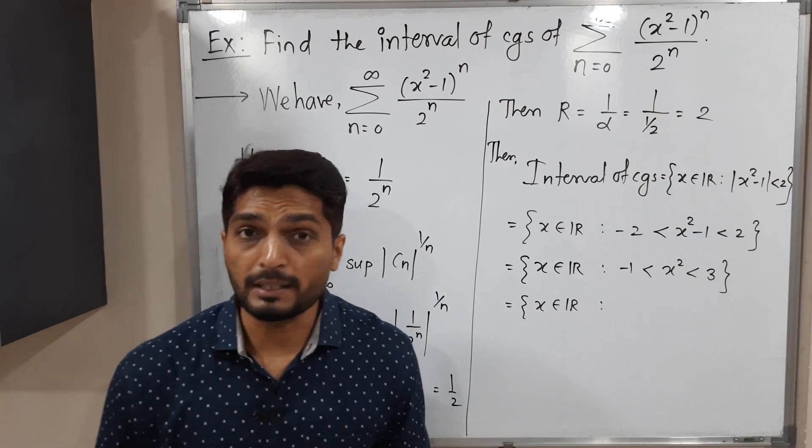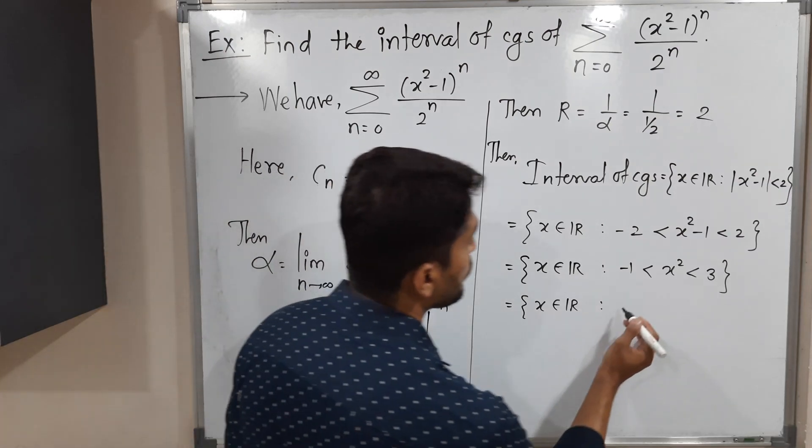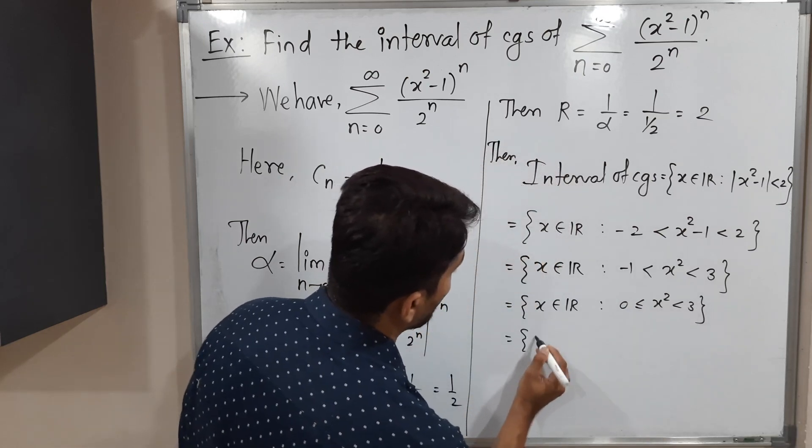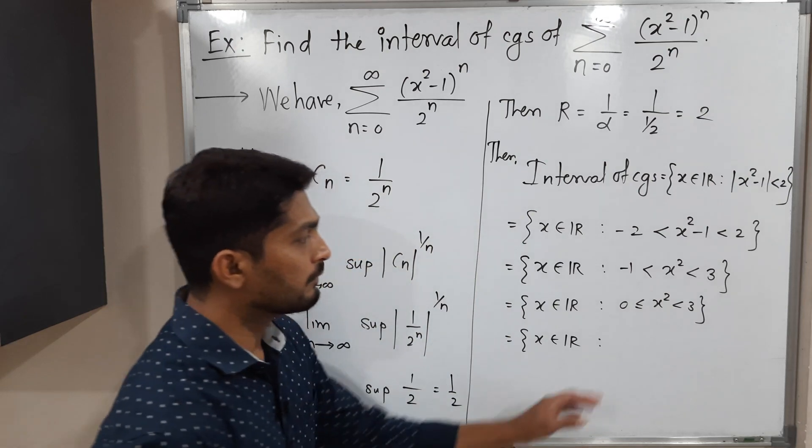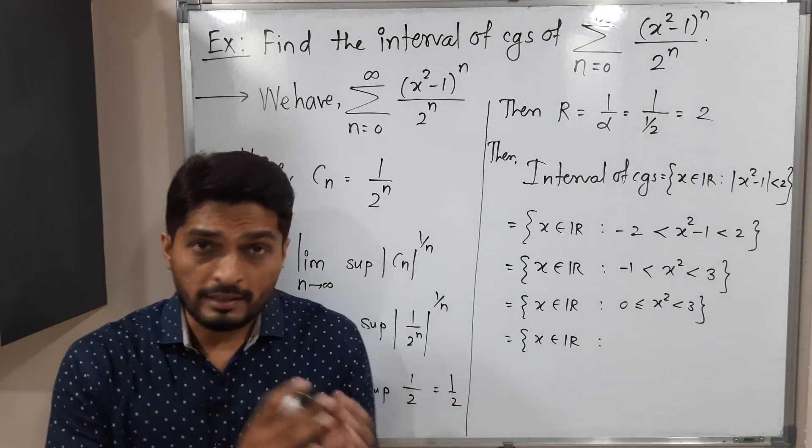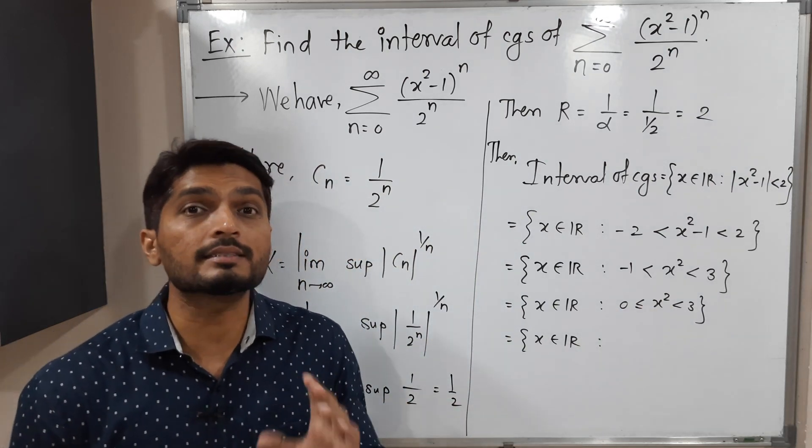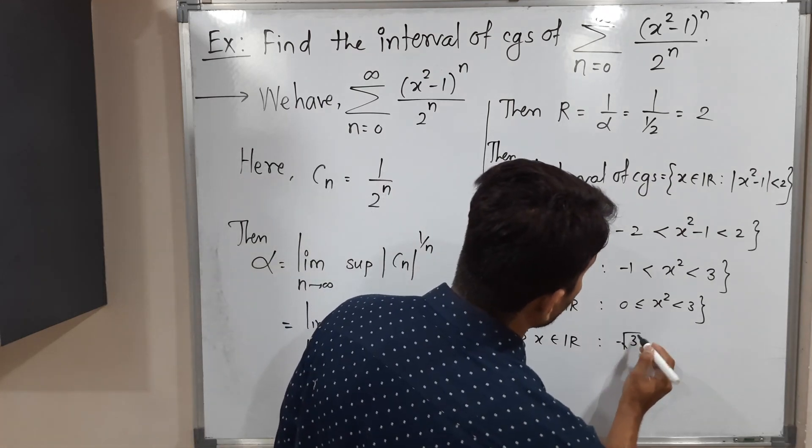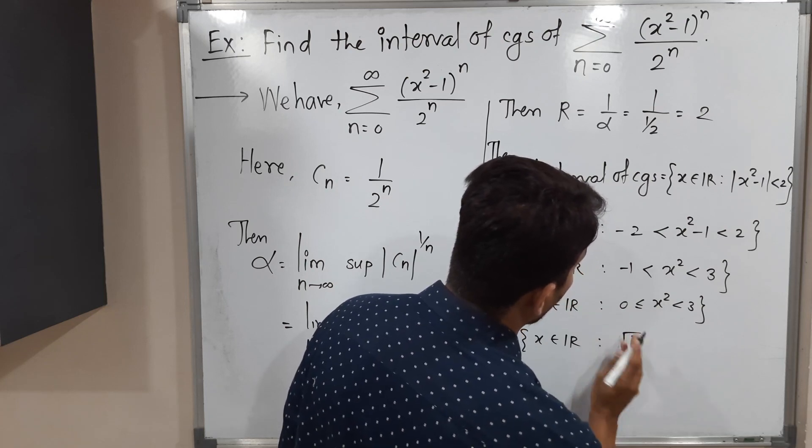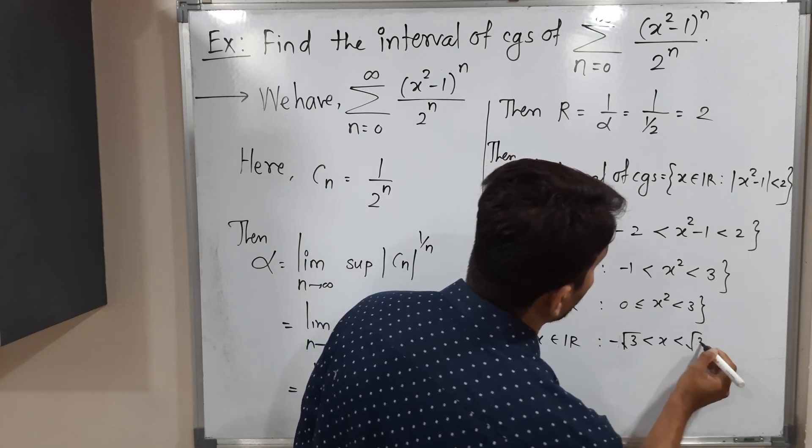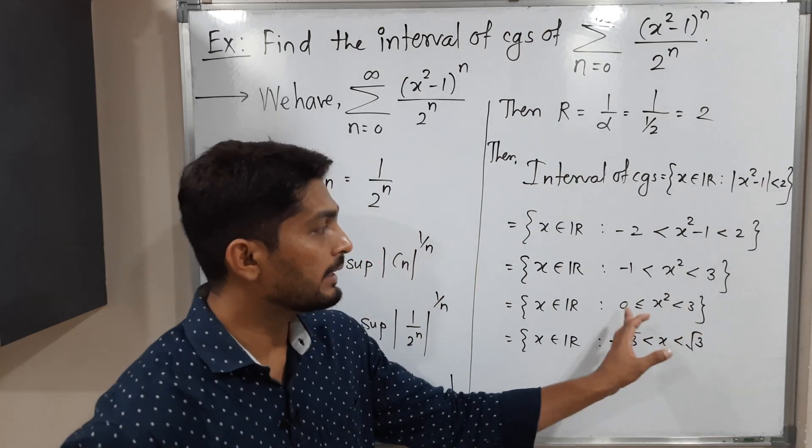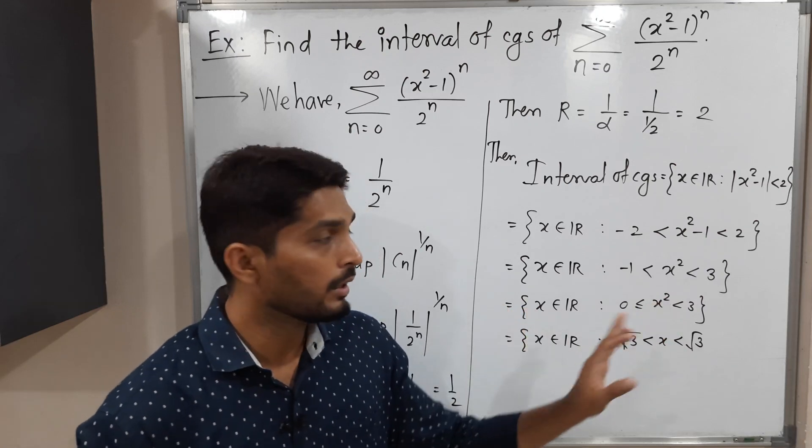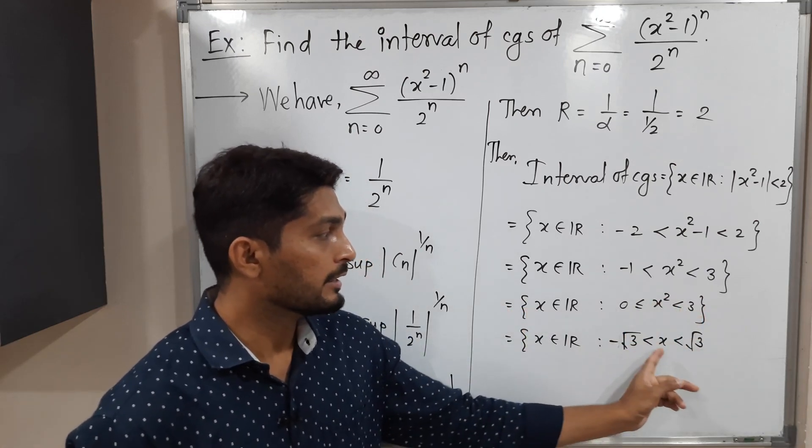So x is a real number such that its square lies between -1 and 3. But the square cannot be negative, so the lowest possible value of x² is 0. We want x such that its square is less than 3. That means x should lie between -√3 and √3, then its square will be between 0 and 3. If you take the square, obviously it is greater than or equal to 0; we are interested in the square being less than 3, so x should lie between -√3 and √3.